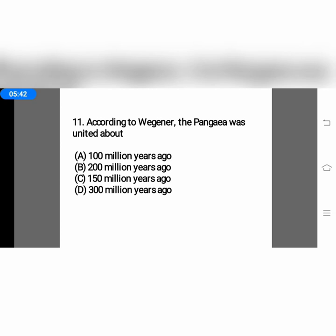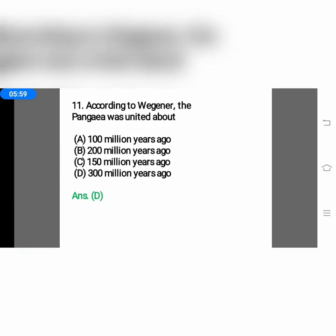The next question: according to Wegener, Pangea was united about — option A, 100 million years ago; option B, 200 million years ago; option C, 150 million years ago; or option D, 300 million years ago. Pangea was united about 300 million years ago, so the answer is option D.